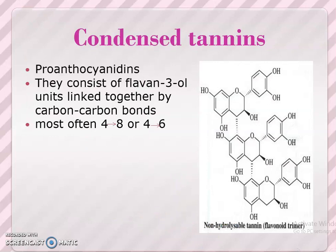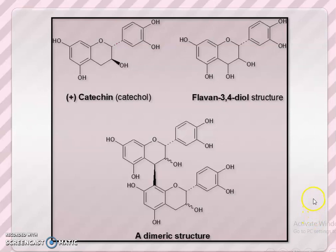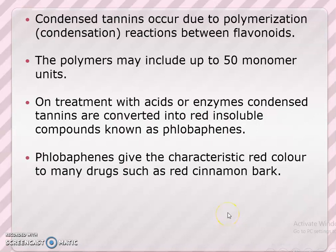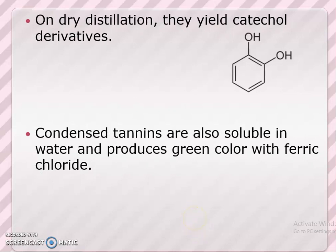The second class is condensed tannins, also known as proanthocyanidins. They consist of flavan-3-ol units linked together by carbon-carbon bonds. Here is an example of non-hydrolysable tannins, also known as a flavonoid trimer. Examples include catechin and flavan-3-ol dimeric structures. Condensed tannins occur due to polymerization of flavonoids; the polymers may include up to 50 monomer units. On treatment with acids or enzymes, condensed tannins are converted into a red insoluble compound known as phlobaphens, which gives the characteristic red color to drugs such as cinnamon bark. On dry distillation, they yield catechol derivatives. Condensed tannins are also soluble in water and produce a green color with ferric chloride.